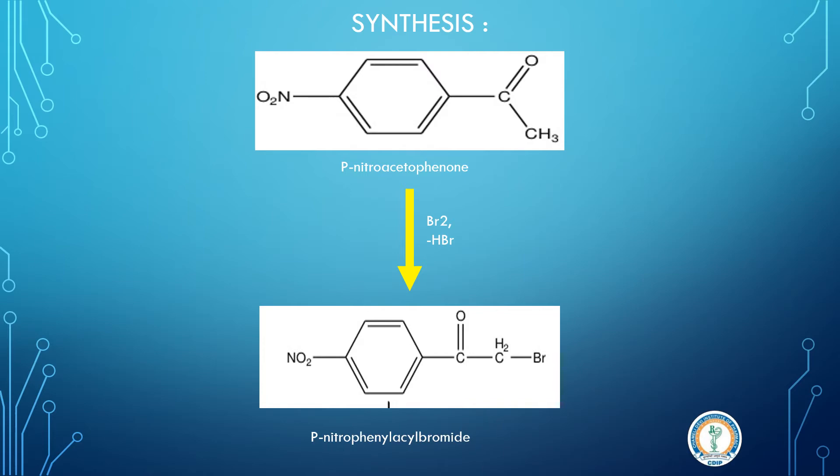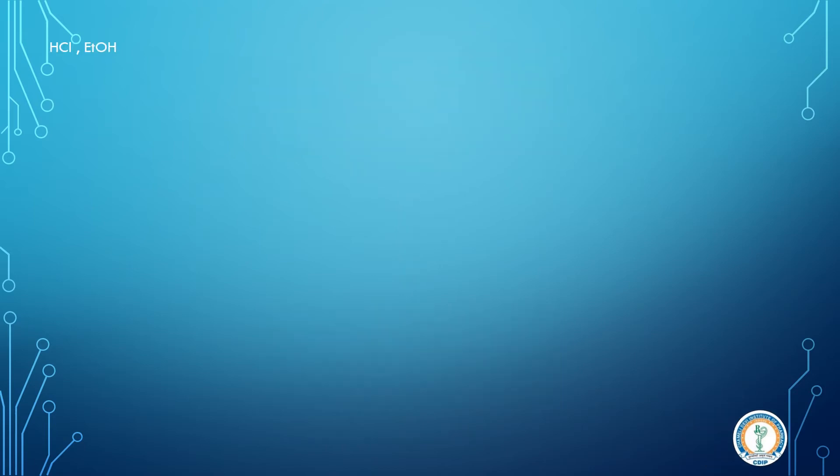Now further we will get paranitroacetophenol, this will be the bromine derivative. We have to react with hexamine, which is (CH2)6N4. Hexamine reaction is carried out in presence of HCl in alcohol, that is ethyl alcohol. We want to do the substitution at bromine because further reaction will be carried out with amino group. So bromine position, we have to add amino group.